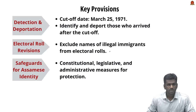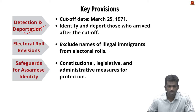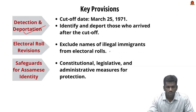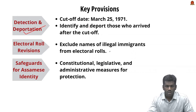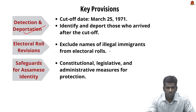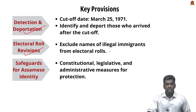The key provisions of the Assam Accord include: first, detection and deportation — the core issue addressed was illegal immigration from Bangladesh. The agreement set March 25, 1971 as a cut-off date. All persons who entered Assam before this date were recognized as Indian citizens, while those who entered after this date were to be detected and deported as illegal immigrants.